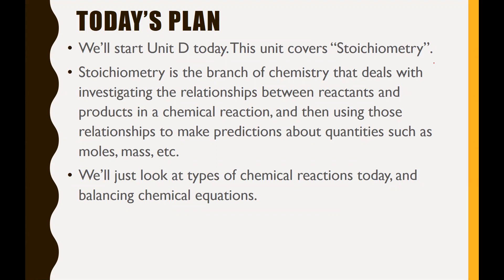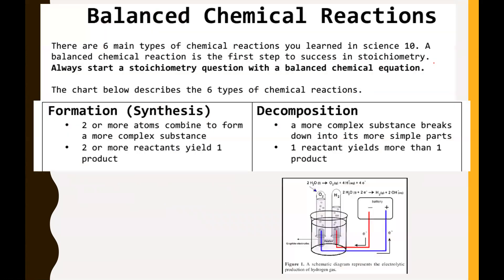In other words, by the end of today you should be able to identify what type of chemical reaction you have as well as how to balance that chemical reaction. So just to kind of recall some things: first of all, there's six main types of chemical reactions that you learned back in science 10 as well, of course, earlier in chemistry 20.